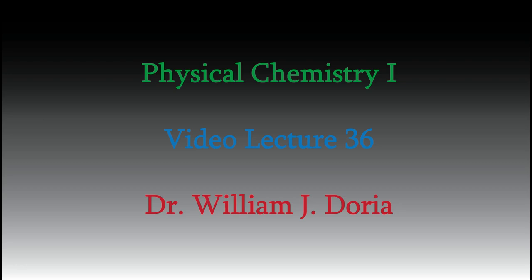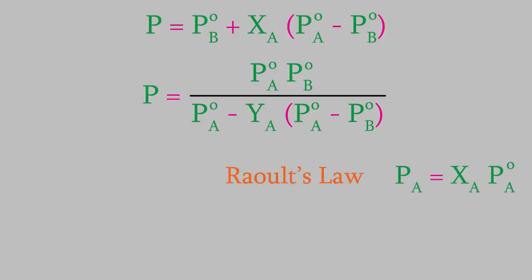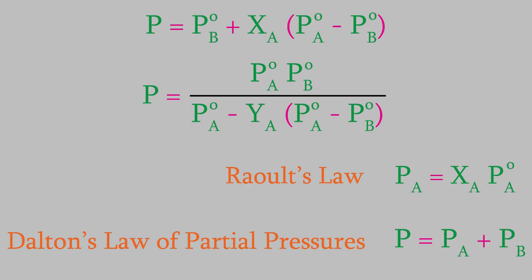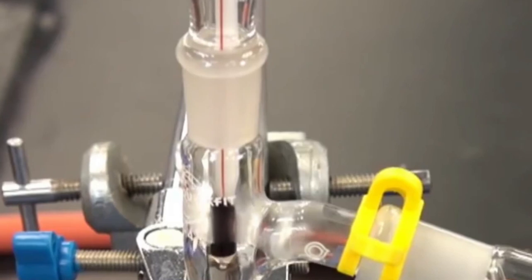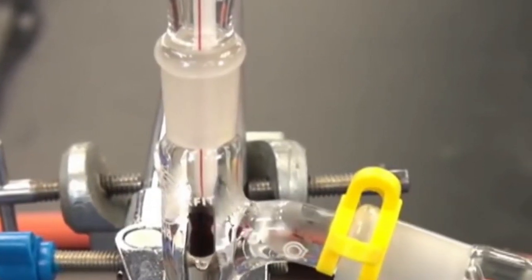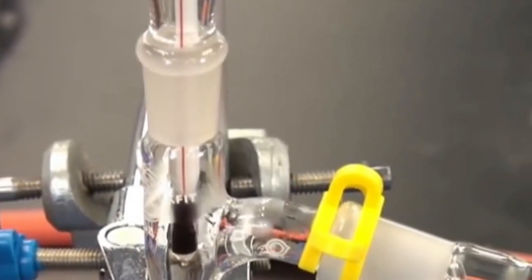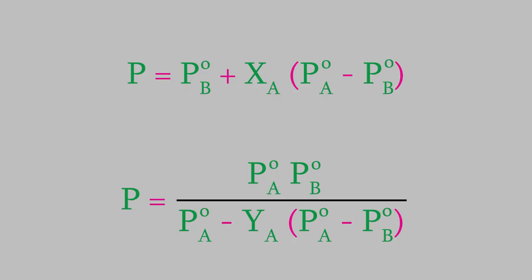Hi, and welcome again to my videos for physical chemistry one. When we last met, we walked through the derivation of these two equations by starting with Raoult's law and Dalton's law of partial pressures. These equations tell us how the overall vapor pressure above a binary solution is related to the mole fraction of one of the components, A.